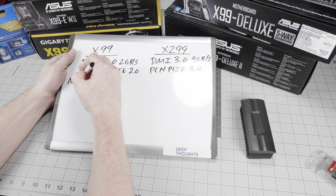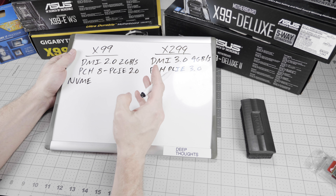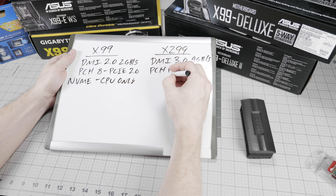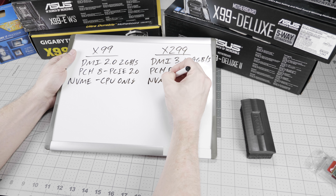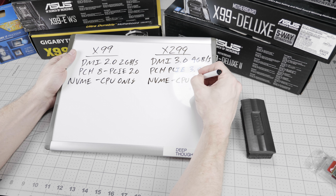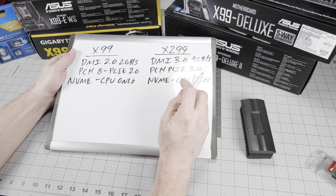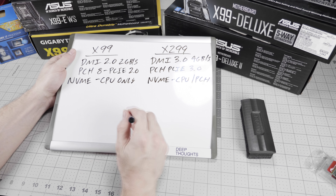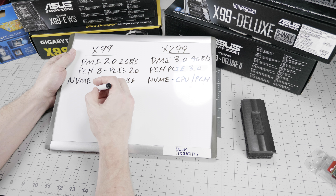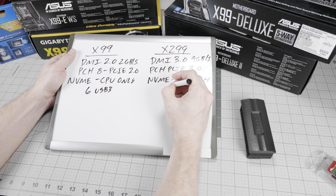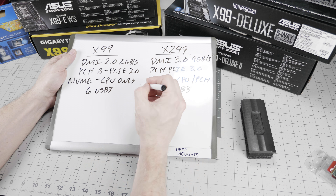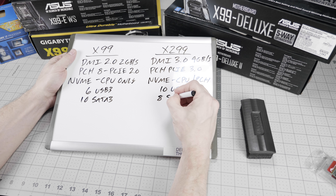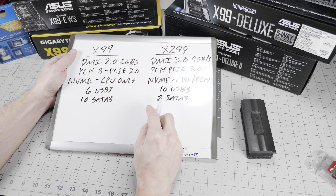In terms of NVMe — which is really what you should be running for storage at this level of platform — it's CPU-only on the X99 side, whereas on X299 you can do CPU or PCH. In fact, you get three X4-lane NVMe interfaces on the platform controller hub for X299. There are also some differences in USB and SATA: you go from six USB 3 to ten USB 3, and from ten SATA 3 down to eight SATA 3, which you'll usually see as only six on most motherboards.